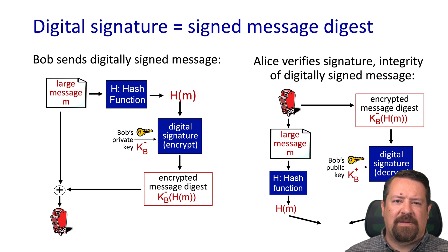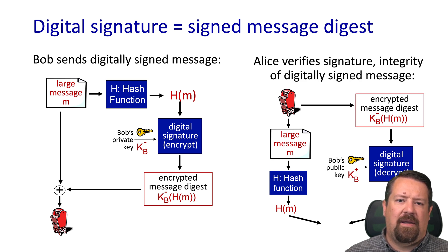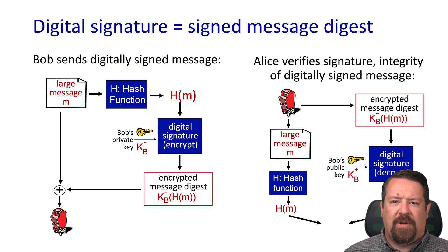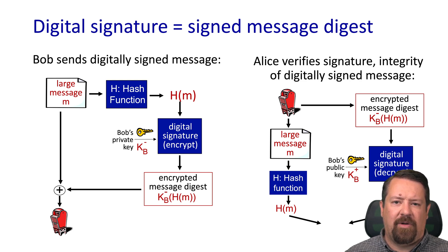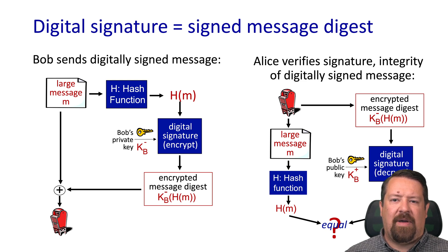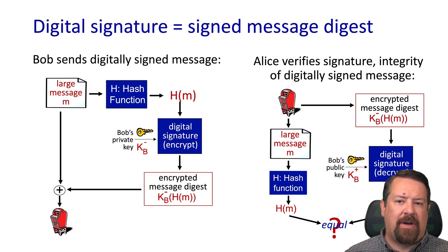Here's the process: Bob has a large message, runs it through a hash function giving H(M) — the message digest. He then uses his private key to encrypt the message digest, and sends the encrypted digest along with the original plaintext message. On the receiving end, we apply Bob's public key to the digital signature, decrypting it to get the unencrypted message digest. We apply the same hash function to the received message — they should match. If they match, we confirm Bob generated the digest and signed it. If they don't match, the plaintext message must have changed in transit, or someone else signed it — either way, you can't trust the message.